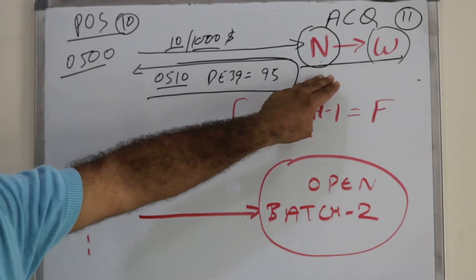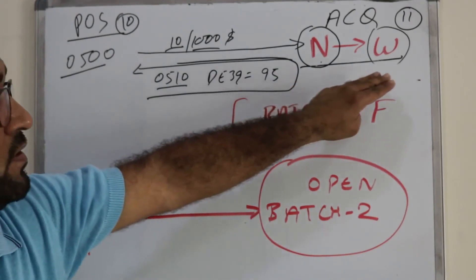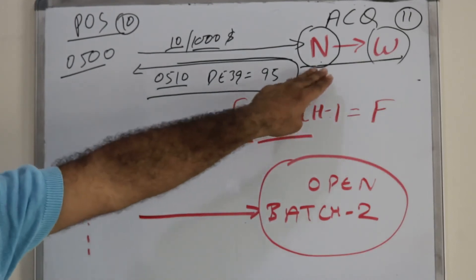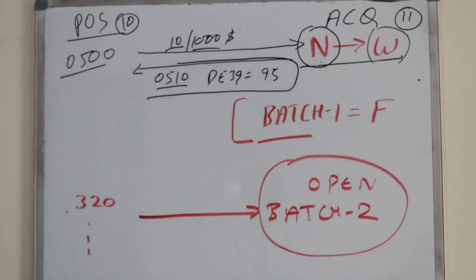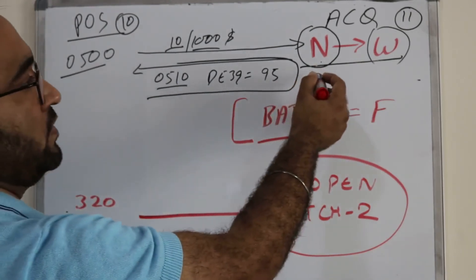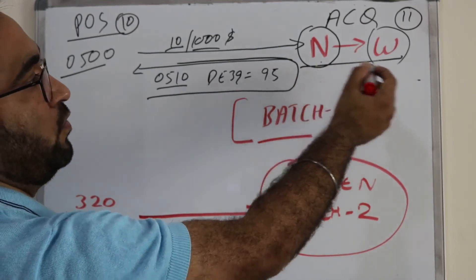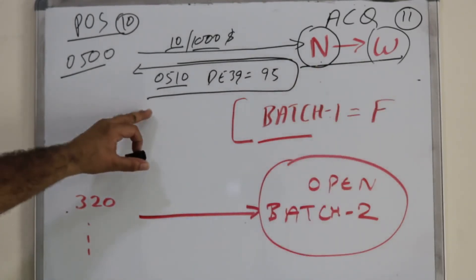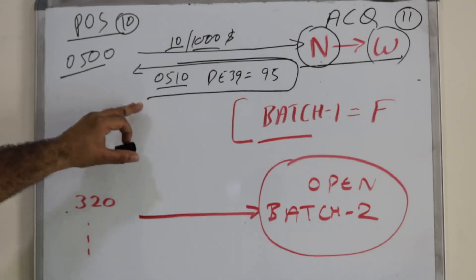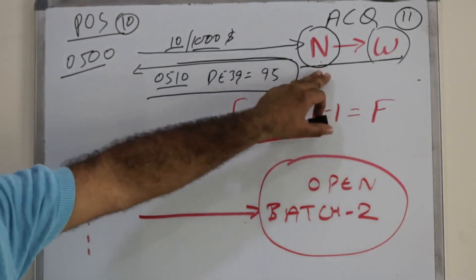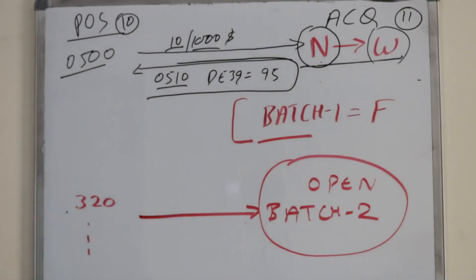In this example, we will assume the status has been changed from N to W — waiting. The batch is marked as failed and all 11 transactions' status is changed to W.